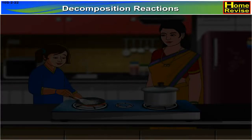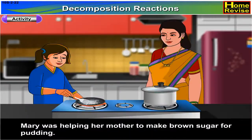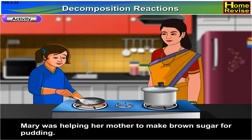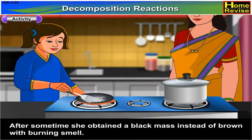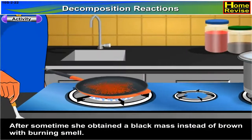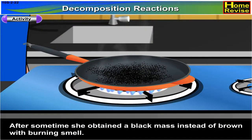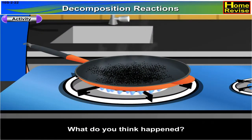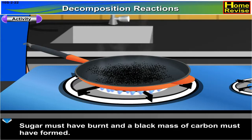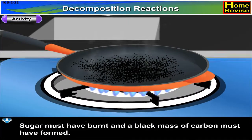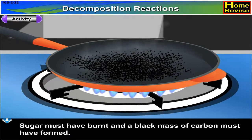Decomposition Reactions. Activity: Mary was helping her mother to make brown sugar for pudding. After some time, she obtained a black mass instead of brown with a burning smell. What do you think happened? Answer: Sugar must have burnt and a black mass of carbon must have formed.